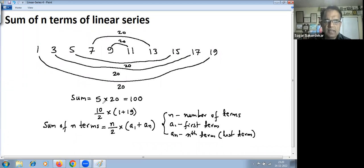So considering this example here, if you want to find sum of n terms: n here is 10 divided by 2 into first term, as you know, here is 1, the last term is 19. So 2, 5 is 10, so 5 into 1 plus 19 is 20, that gives you 100. So same as already calculated here.